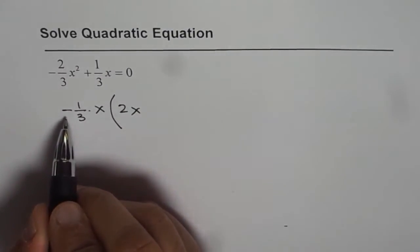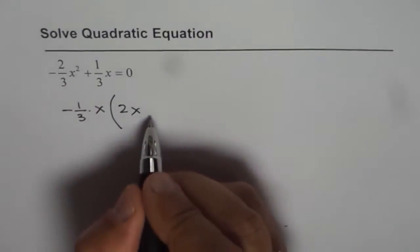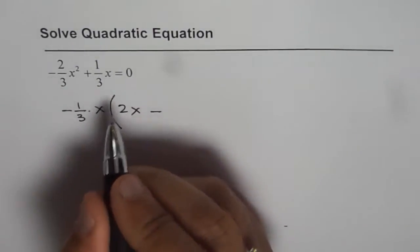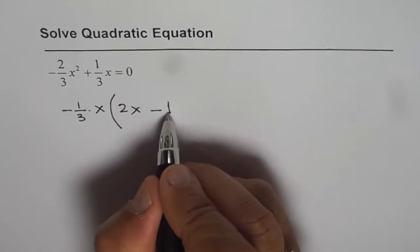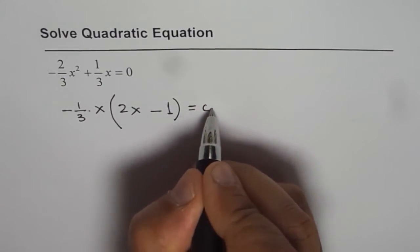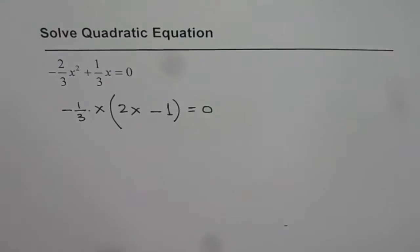And since I factored minus, this sign will become negative and we already factored 1 over 3 as such. So it would be negative of 1 equals to 0, right? This is the most critical step to solve this equation.